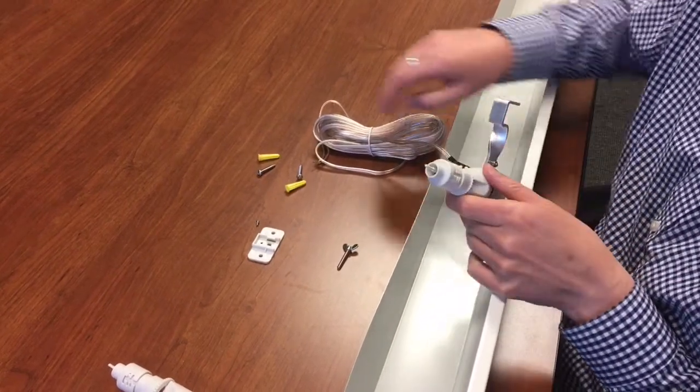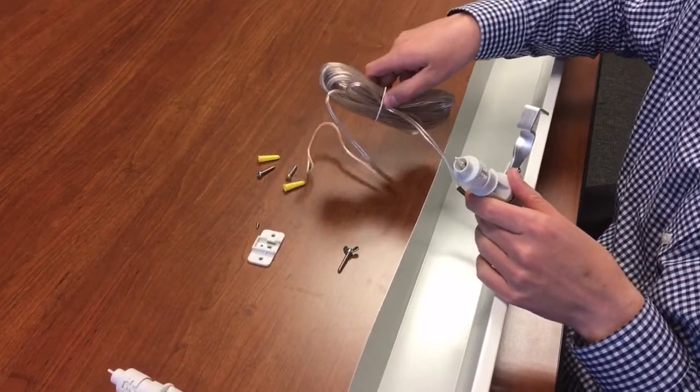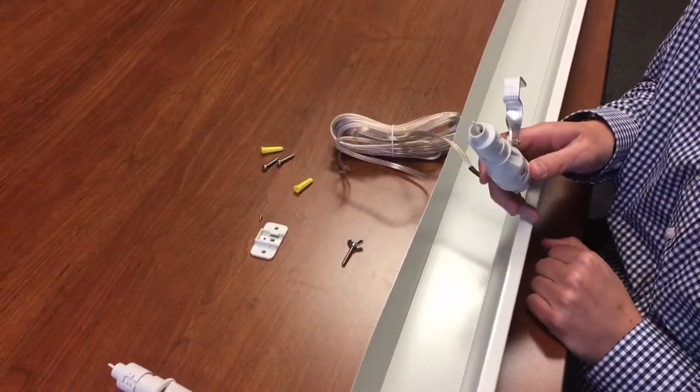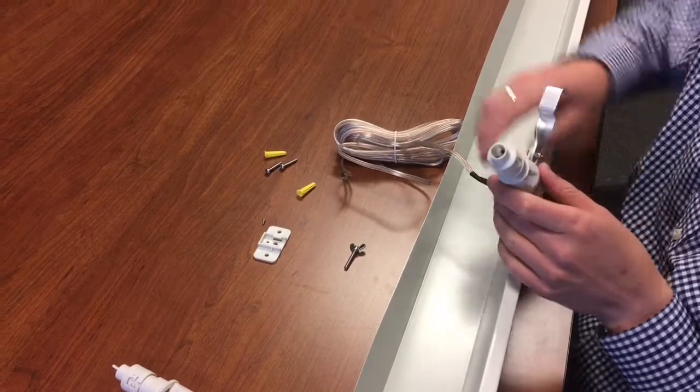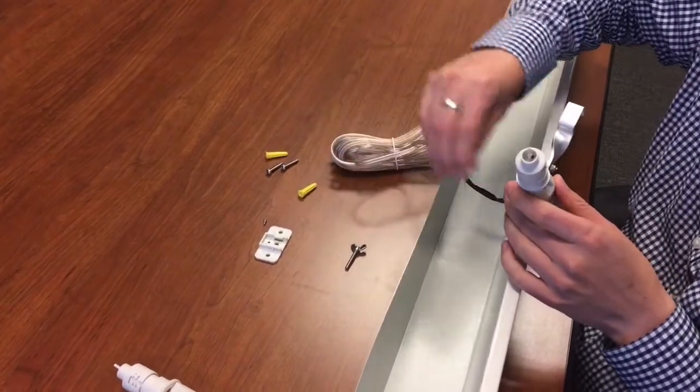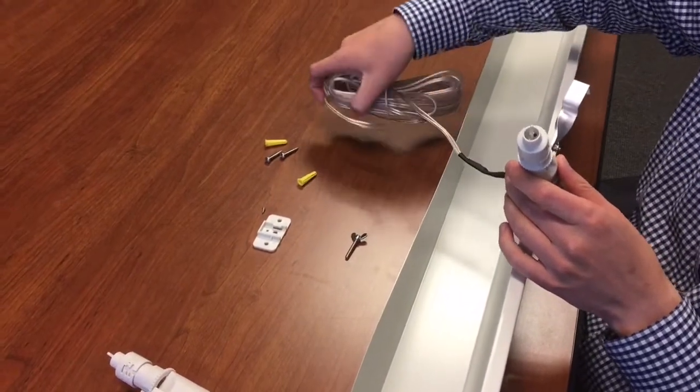With the wired rain sensor that I have here, it comes with a 30-foot cord, and that cord can be extended up to 100 feet by using splicing and grease caps on the end. That's been covered in another video. Let me show you the two mounting options you have for this.